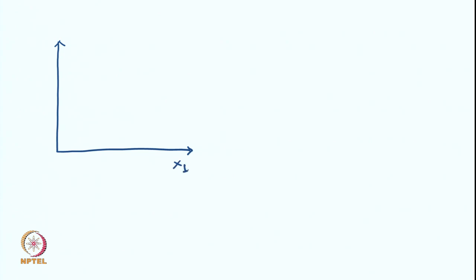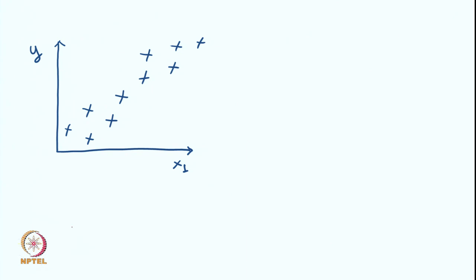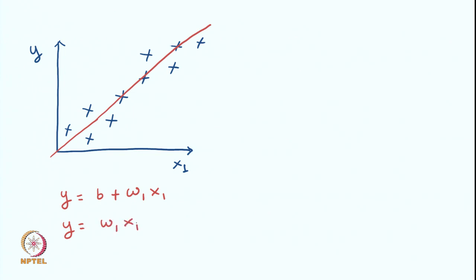Let us say this is a single variable x1 and y is the output value or label, and let us say these are the data points. We want to fit a line — linear regression represents a line. Let us say we have a line which passes through the origin, so the equation of this line is y = b + w1*x1, where b=0 because the line passes through the origin, giving us w1*x1.